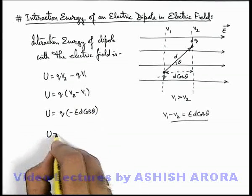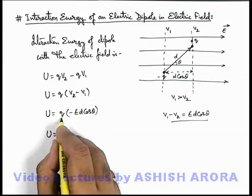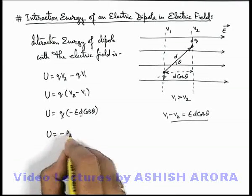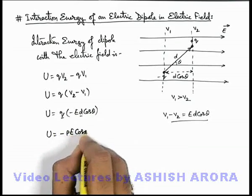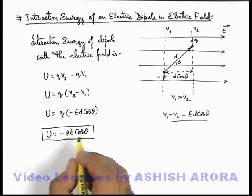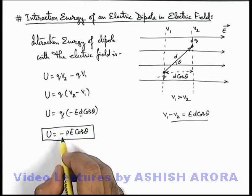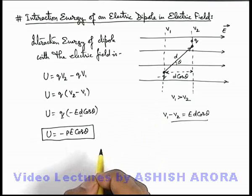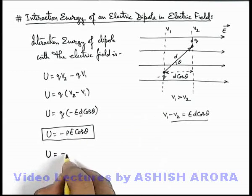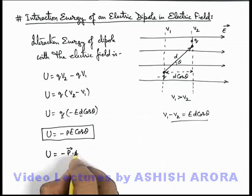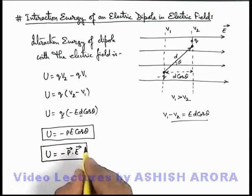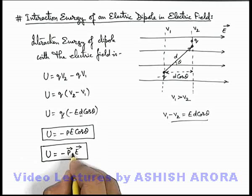So the potential energy can be written as minus p·E·cosθ, since the product of charge and separation is the dipole moment p. This is the expression for the interaction energy of a dipole placed in an electric field. Vectorially, it can be rewritten as minus p dot E, since p·E·cosθ is the dot product of dipole moment and electric field.